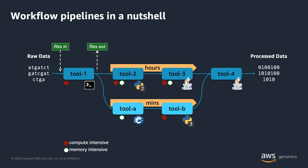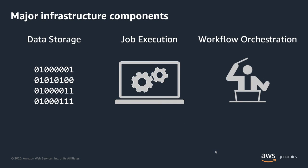This adds complexity as to how and when a tool in the workflow should be run. When it comes to running your genomics data analysis and workflow pipelines, there are three major infrastructural components to consider: data storage, job execution, and workflow orchestration. We'll cover all of these in this talk.